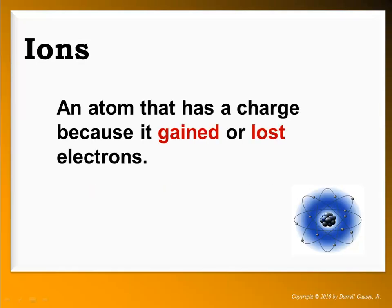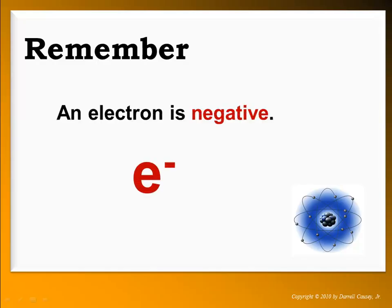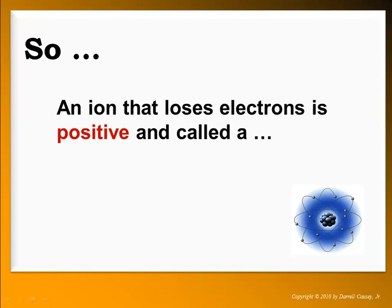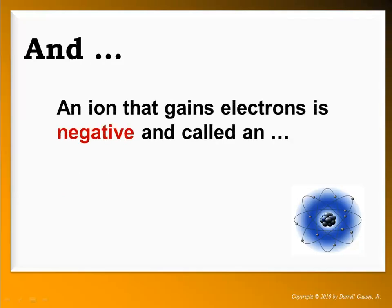An ion is an atom that has a charge because it gained or lost electrons. Remember, an electron is negative, has a negative charge. And so, an atom that loses electrons is positive and called a cation. And an ion that gains electrons is negative and called an anion.